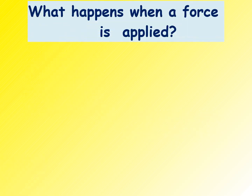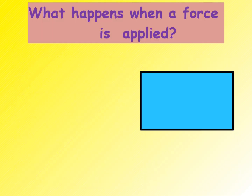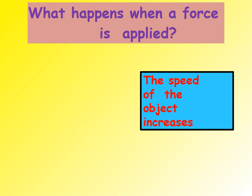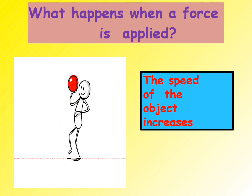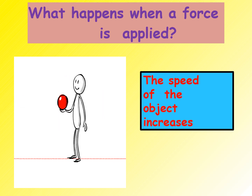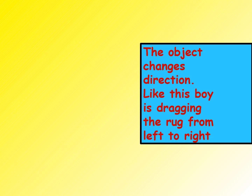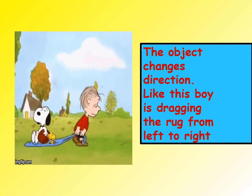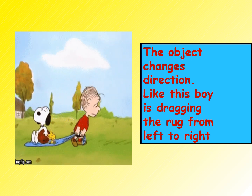What happens when a force is applied? The stationary object or non-living things can move when force is applied on them. When we apply force, the speed of the object increases. Look at this picture — you can see the man is throwing the ball. With the force the man puts, the ball goes with speed. The object also changes direction — like this boy is dragging the rug from left to right, putting force in order to make that rug move.